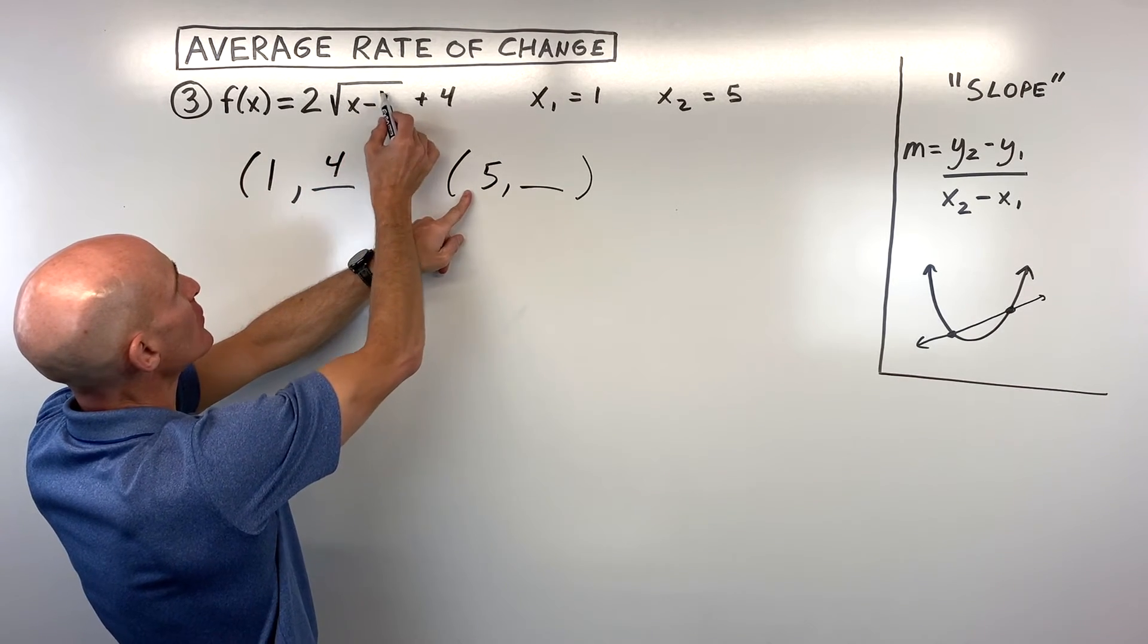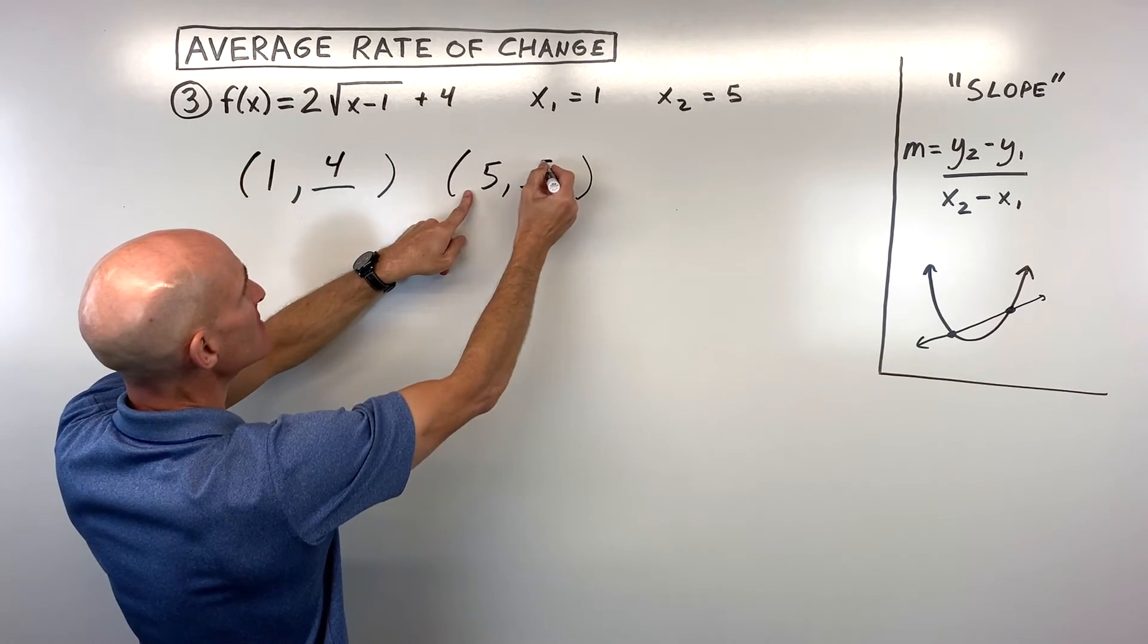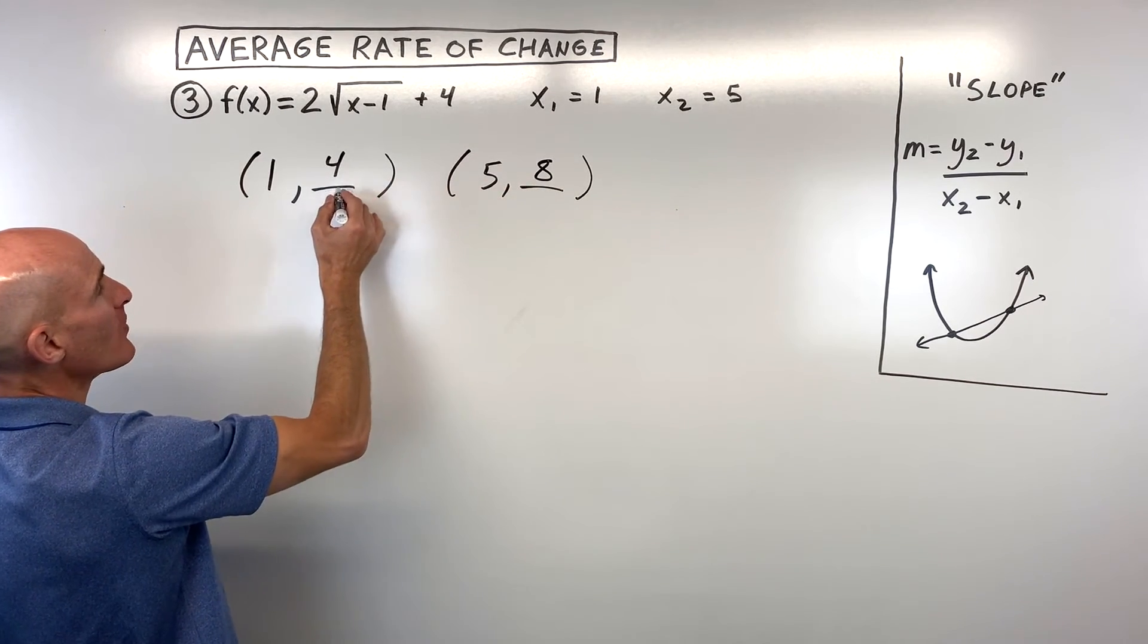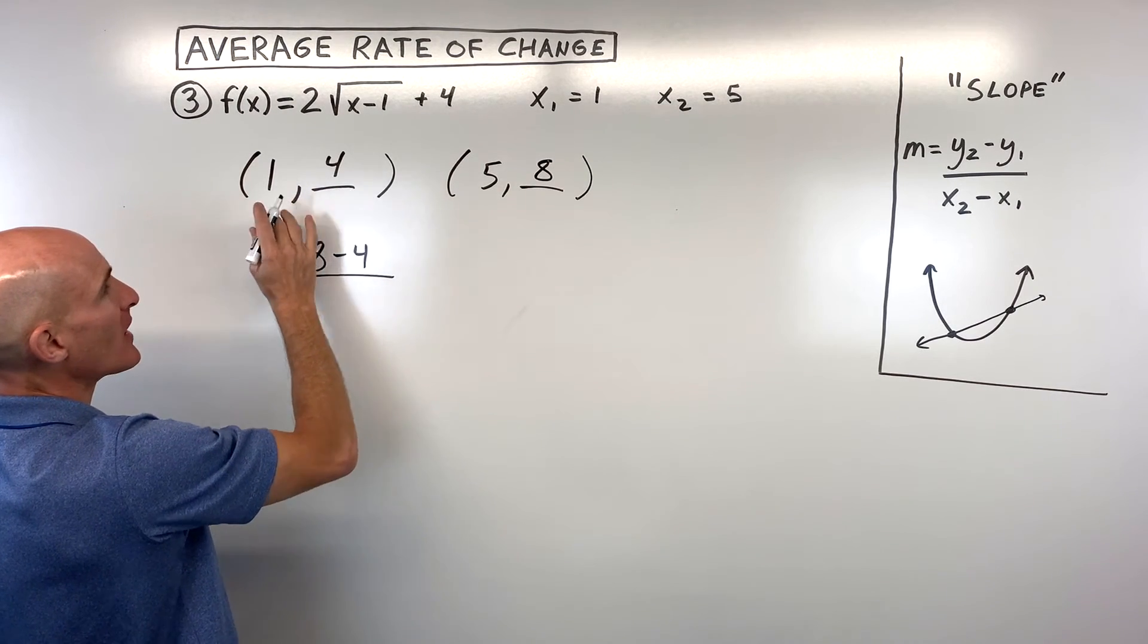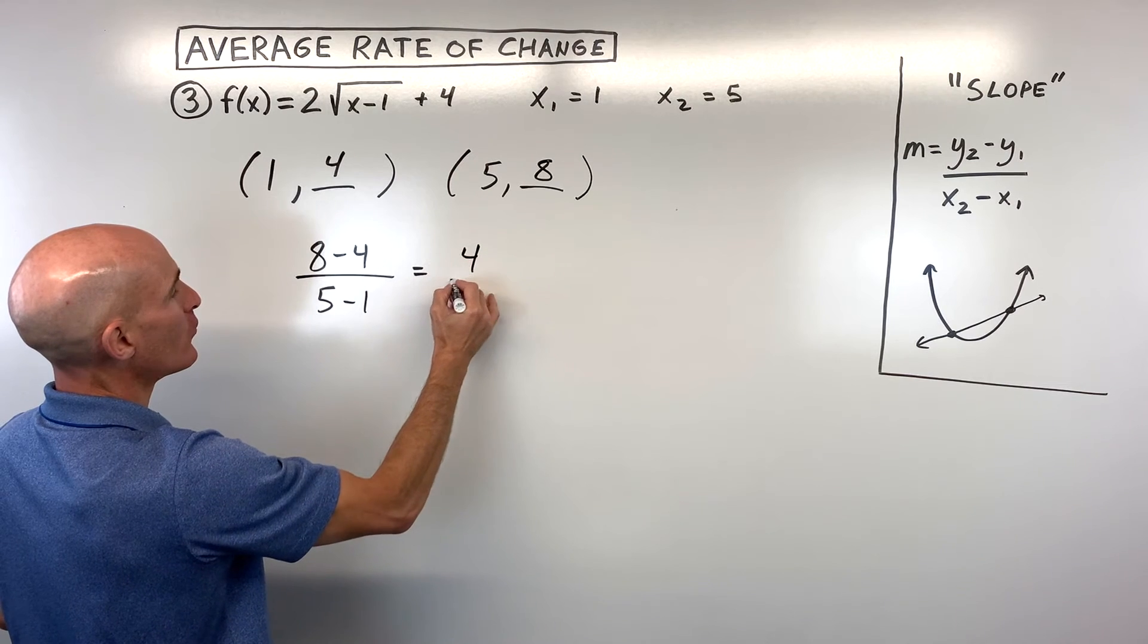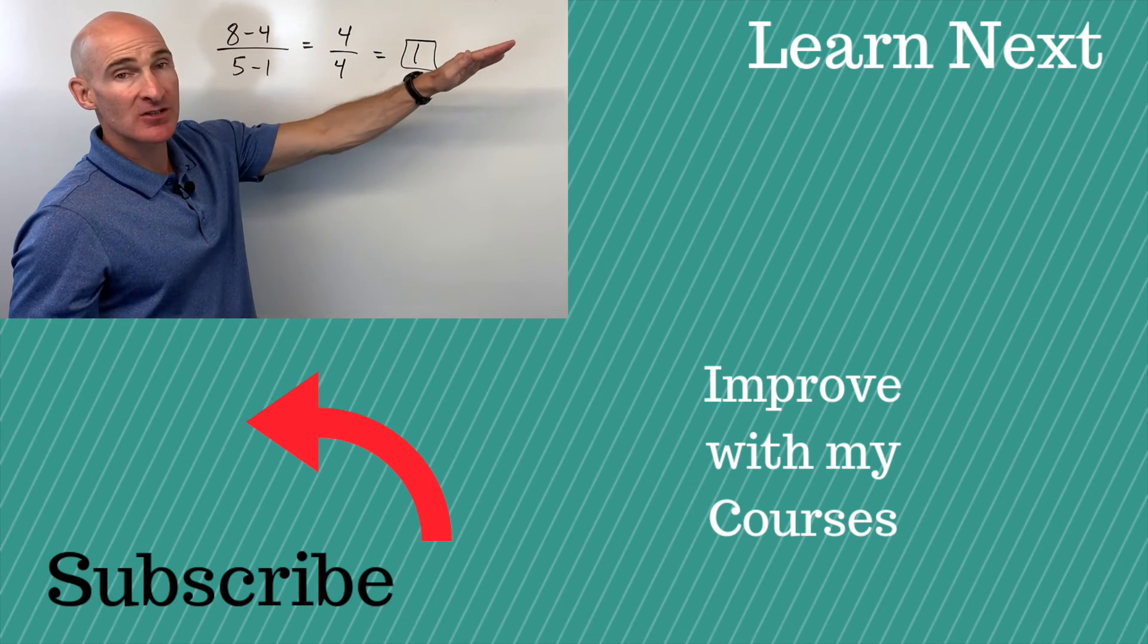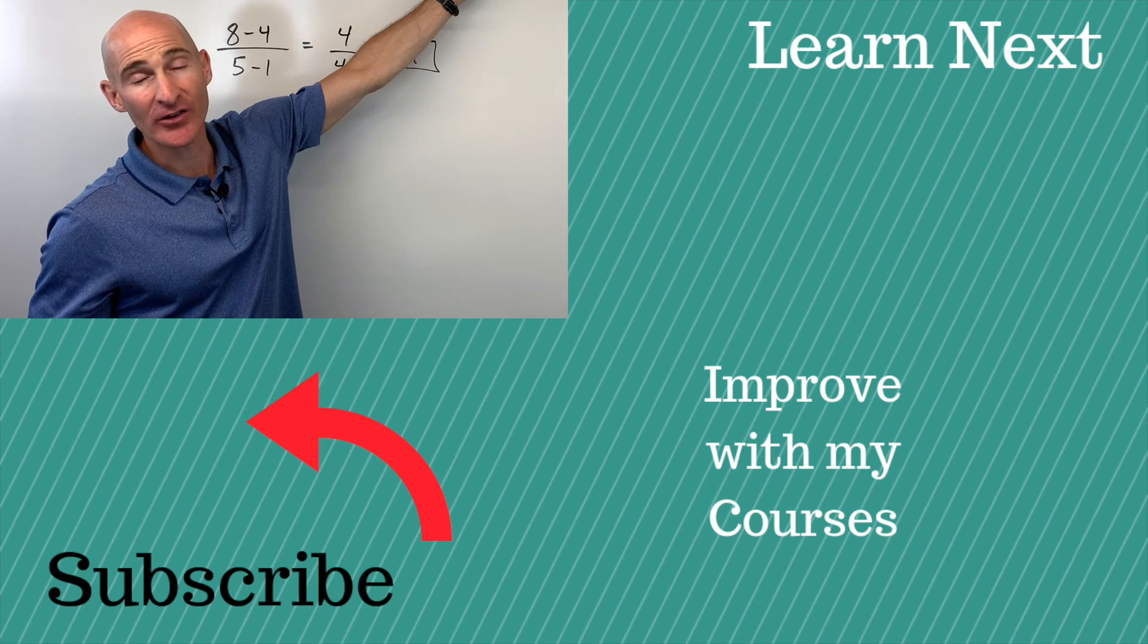If I put 5 in, 5 minus 1 is 4, the square root of 4 is 2, times this 2 is 4, plus 4 is 8. Now we have our two coordinates. We can find our slope, or our average rate of change, y2 minus y1 over x2 minus x1. 8 minus 4 is 4, 5 minus 1 is 4, and 4 divided by 4 equals 1. So that's the slope, or the average rate of change, between these two x values.